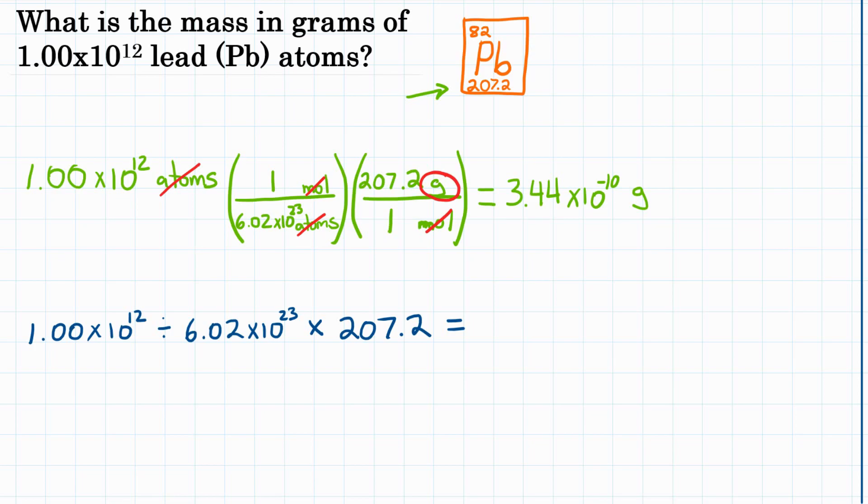Now, if you punch this in your calculator and you got 3.44 times 10 to the 36th, if that's what you got, what your calculator did was took this first part here, solved that, and then multiplied by 10 to the 23rd, and then again by 207.2. That is incorrect. We don't want to do that. Okay, not good.